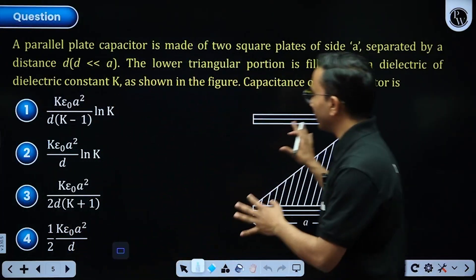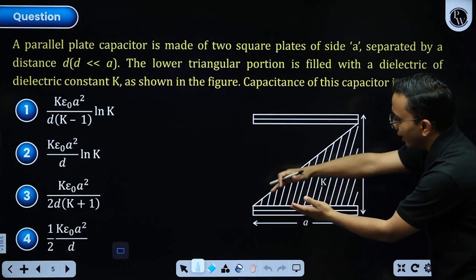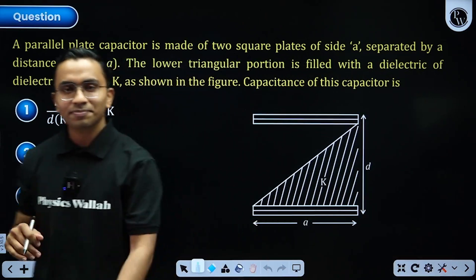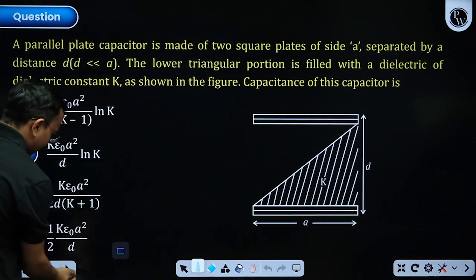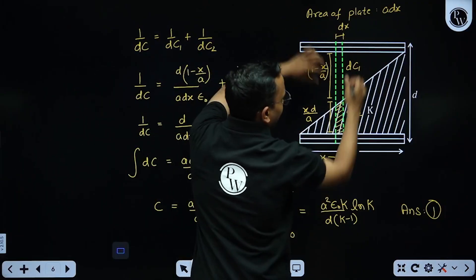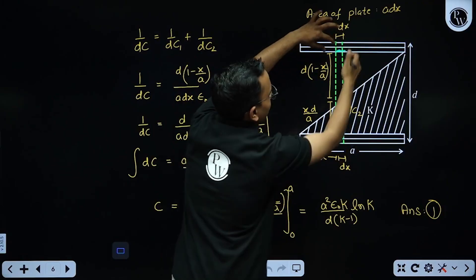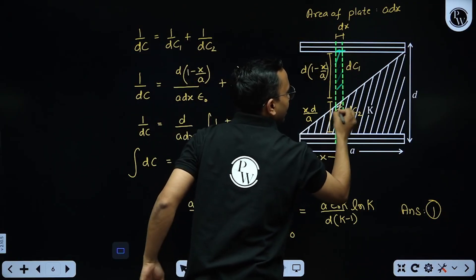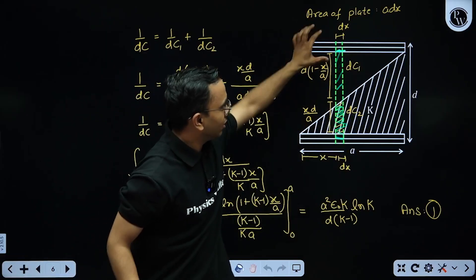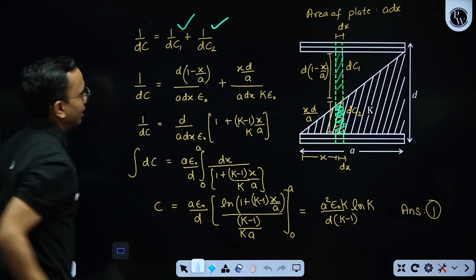Next question: we need to find the capacitance where two plates have a dielectric slab in a triangular shape inserted between them. At a distance x from one end, I take a strip of thickness dx. This gives a small capacitance dC. There is air in part of the gap and dielectric in the other part, so dC1 and dC2 are in series: 1/dC = 1/dC1 + 1/dC2.